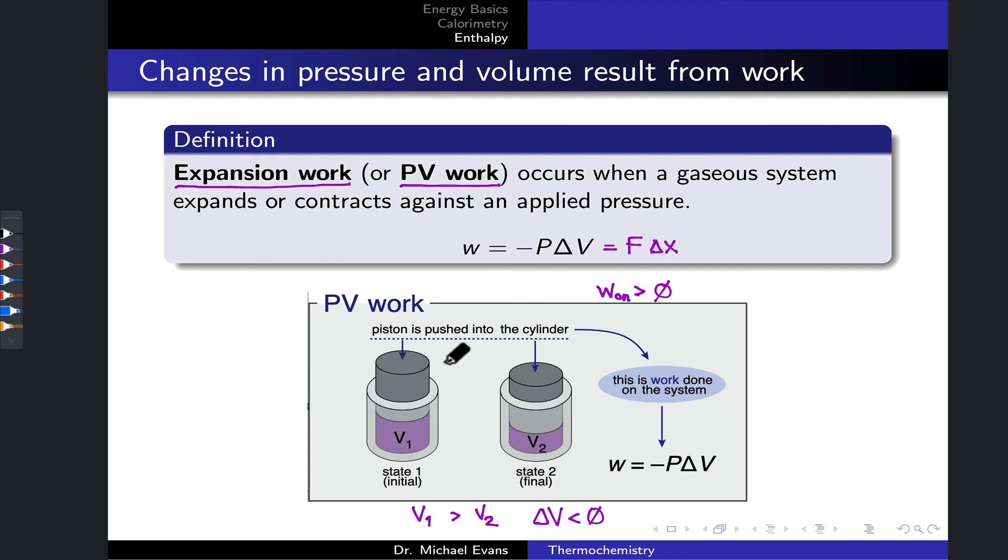So key ideas with expansion work: it involves either compressing a gas and that's going to involve work on the system, positive, or expanding the gas, in which case work is being done by the gaseous system and the work will be negative. And we can calculate that work in quantitative terms using this expression, negative P delta V.